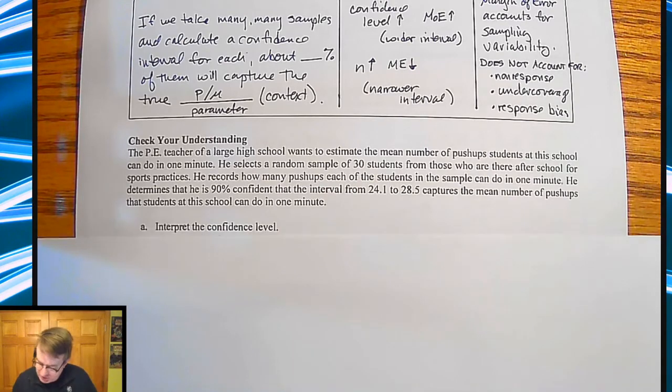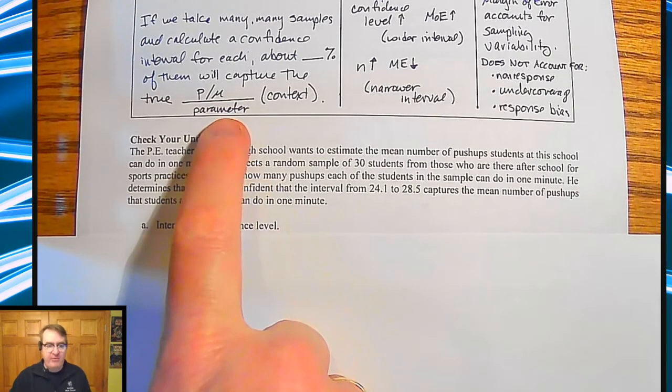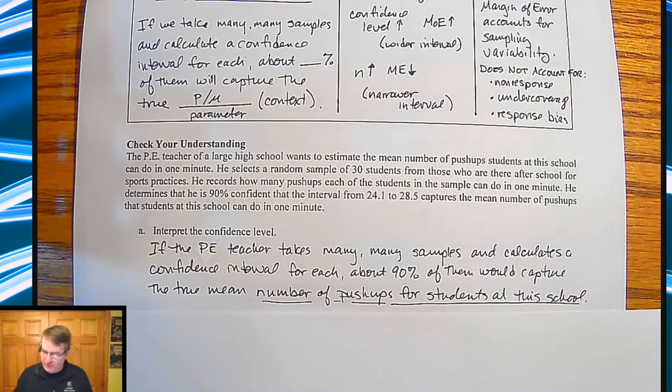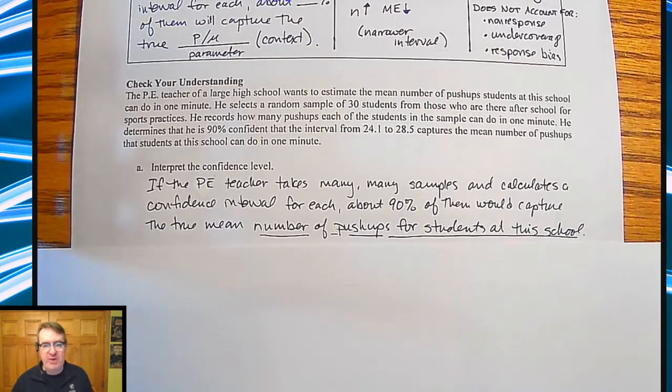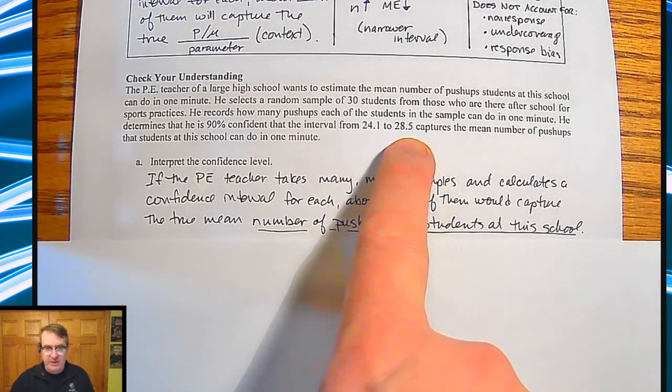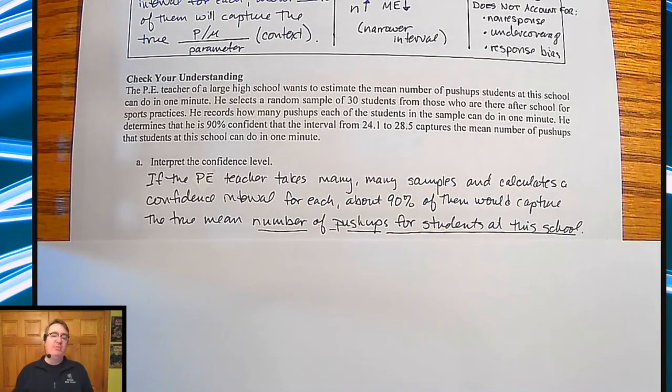All right. So the first question was interpret the confidence level. So if the PE teacher takes many, many samples and calculates the confidence level for each, about 90% of them would capture the true mean number of pushups for the students at the school. Now you might be asking, then why are we doing this? That's giving us an idea of what could be plausible in this case, numbers of pushups that people could do. So it's just one number that we're going to look at and we're going to talk more about how we use them later.